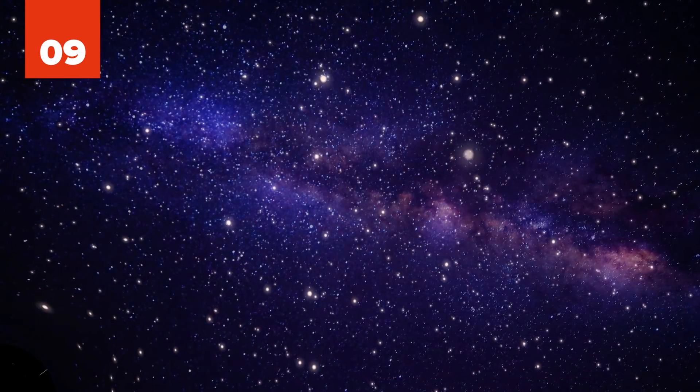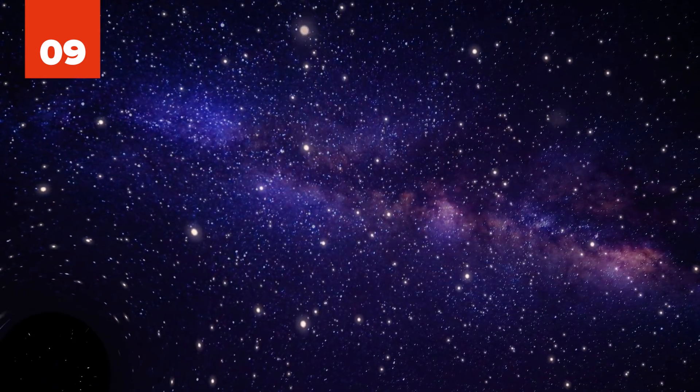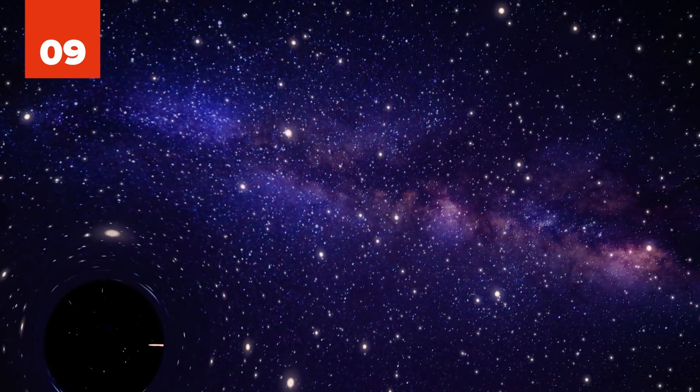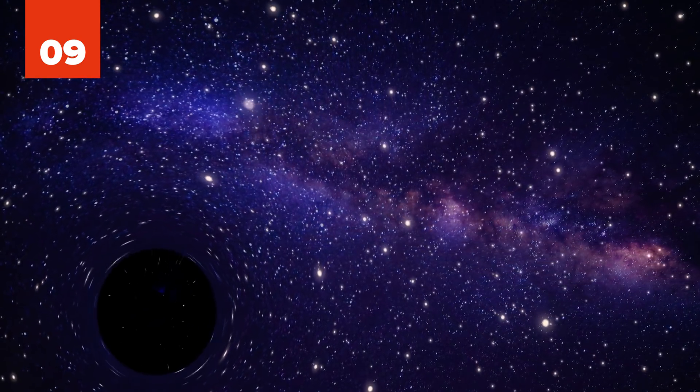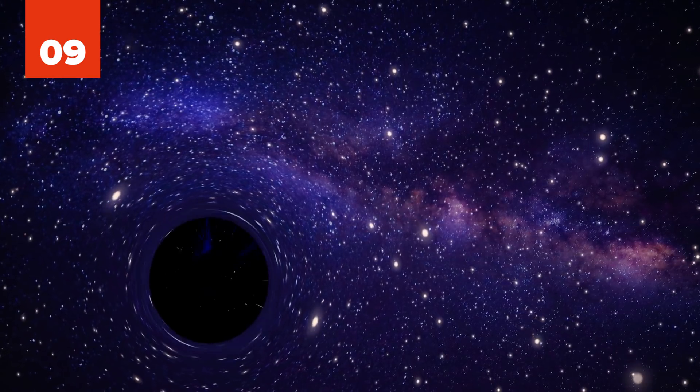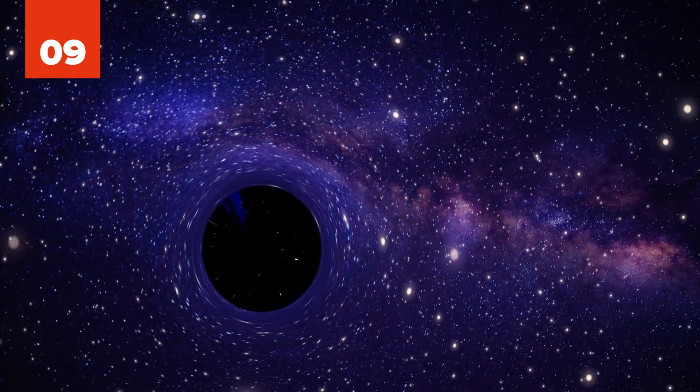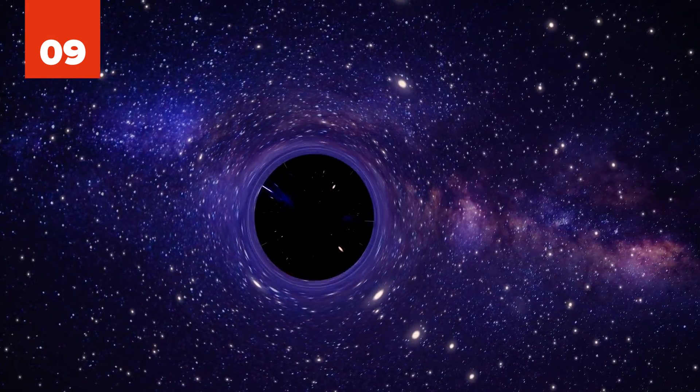To have enough gravity to pull even light into itself, a black hole has to contain an incredible amount of mass in an extremely small space. This means that black holes must have a mass of about 10 to 30 billion times the mass of the Sun.